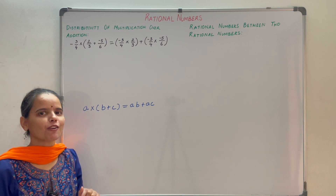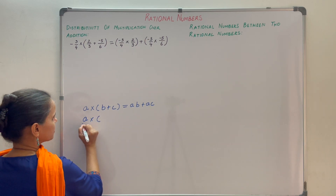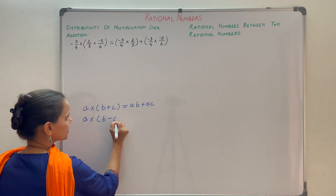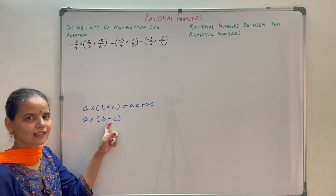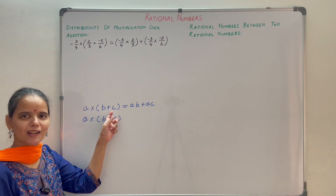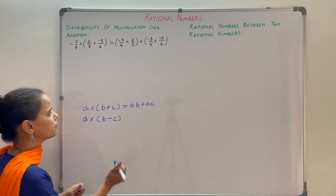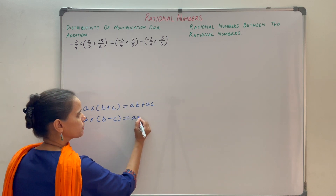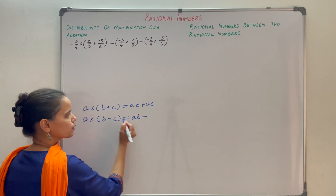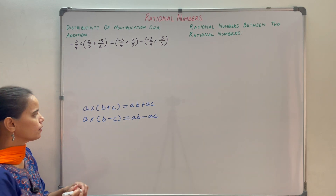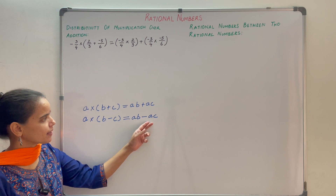Similarly, there is a distributive property of multiplication over subtraction. That means a into (b minus c). Here, first you multiply a to b — both are positive so the result is positive, giving a·b. Then plus into minus is minus, and a into c is a·c. So you get a·b minus a·c.